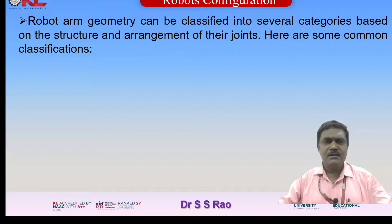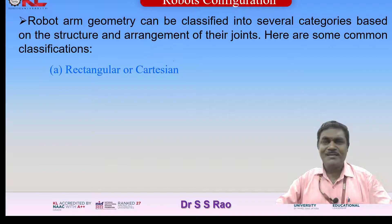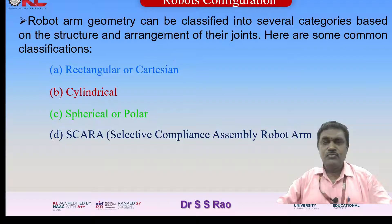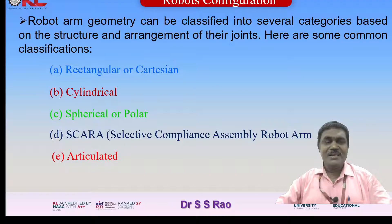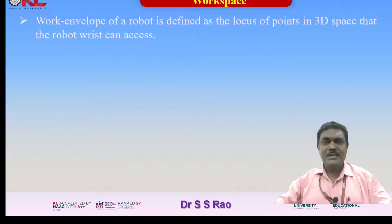Here are some common classifications: first is rectangular or Cartesian configuration; second is cylindrical configuration; third is spherical or polar configuration; fourth is SCARA (Selective Compliance Assembly Robot Arm) configuration; fifth is articulated configuration; sixth is Delta robots; and seventh is parallel robots. These are the frequently used configurations.